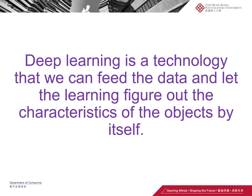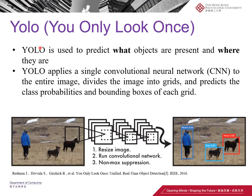Deep learning makes everything easier because the model can figure out the general characteristics of appearance by itself. Let's take YOLO as an example — it's quite successful and popular, and it can be applied to different types of objects as long as you have the training datasets. YOLO stands for 'You Only Look Once,' meaning the image goes through the deep network once and YOLO gives you the bounding rectangles and class labels for each object.